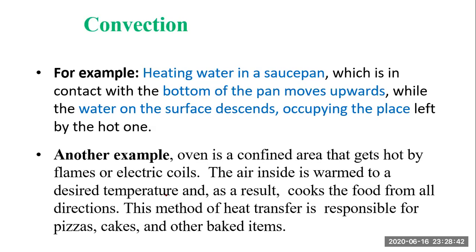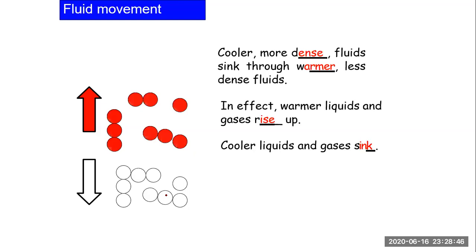The method of fluid movement in convection works as follows: whenever heating happens, the heated molecules become less dense and lighter, so they go upwards. The cooler, denser molecules at the top go downwards to take their place. By this movement of particles, the whole fluid is heated. For example, when heating water in a saucepan, the bottom water heats first and rises, then the upper cooler water goes downwards, and in this way the whole water is heated.